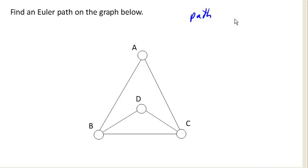So it's a path that uses every edge once, and only once, so no repeats. Now we're allowed to visit the same vertex multiple times with Euler paths, but not the same edge.